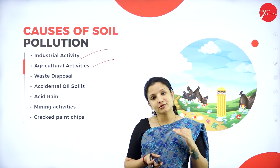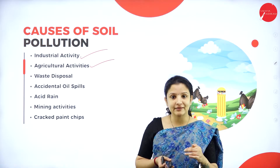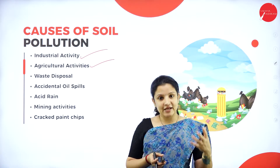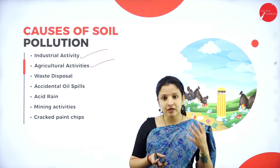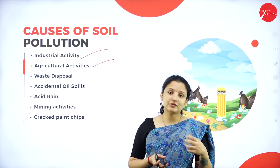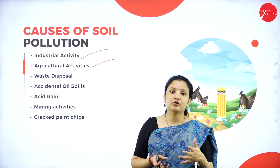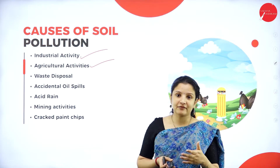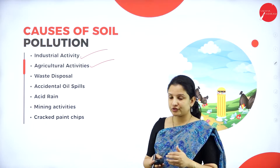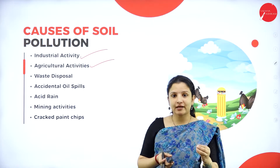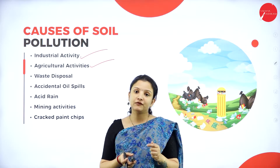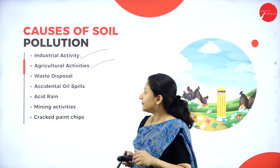We never think about the effects these chemicals pose on the environment. These chemicals can leach into the soil along with water and contaminate it. Moreover, the good microbes in the soil — which are needed for maintaining the pH and fertility of the soil — will be lost because of these agricultural chemicals. Therefore, agricultural activities are also one of the major causes of soil pollution.